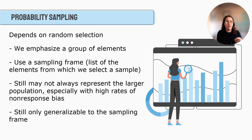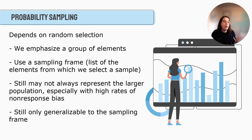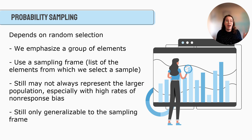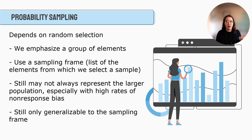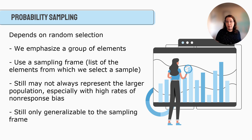Those are the four types of non-probability sampling. Now we'll look at probability sampling, which depends on random selection — the idea that everyone has an equal chance or probability of being chosen. It uses a sampling frame, which could be a list of individuals or schools or other elements. It may not always represent the larger population, especially with high rates of non-response bias, and it's still only generalizable to the sampling frame. But it gives more external validity than the non-probability techniques we've discussed.